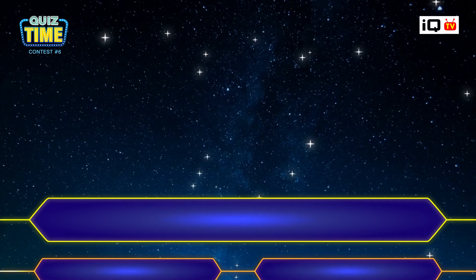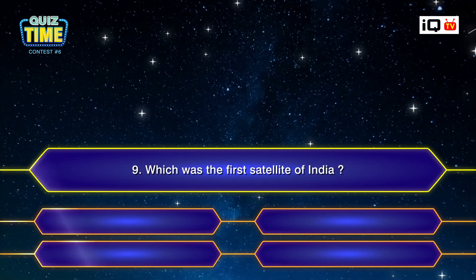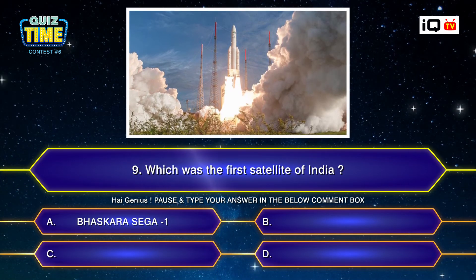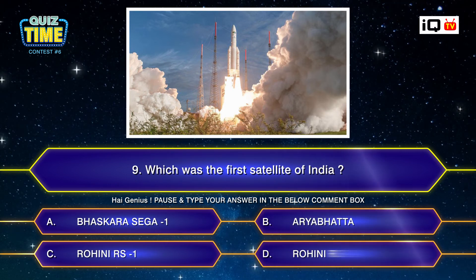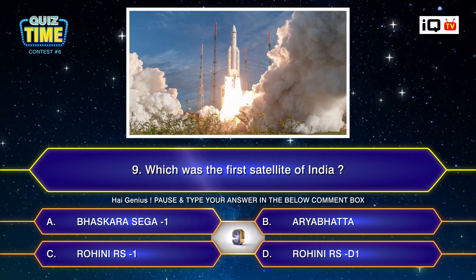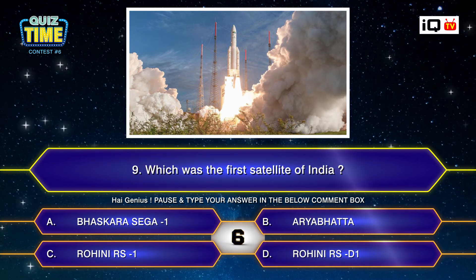Number nine: Which was the first satellite of India? A. Bhaskar SEGA 1, B. Aryabhatta, C. Rohini RS 1, D. Rohini RS D1. Your time starts now. Type your answer down.